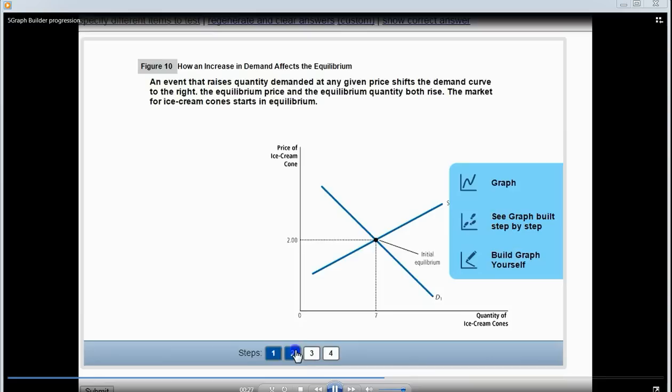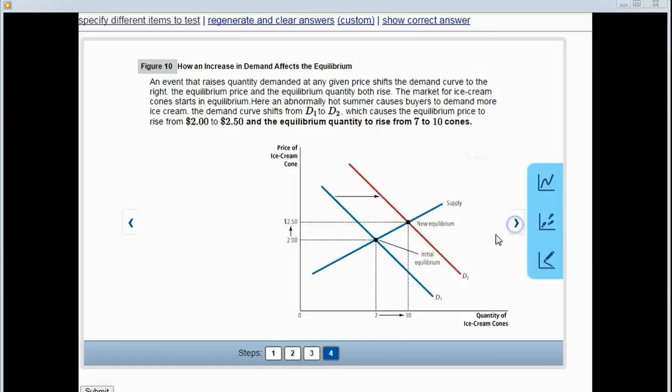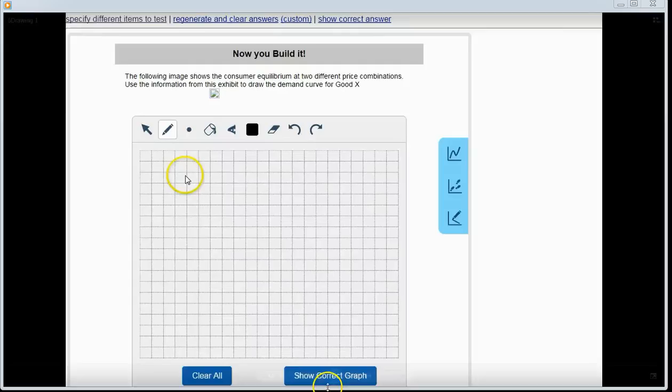And you'll see as they progress through, the explanation at the top changes. They can navigate with the arrows or down below. So they can really see how the graph is built. And then the third step is to actually draw a graph.